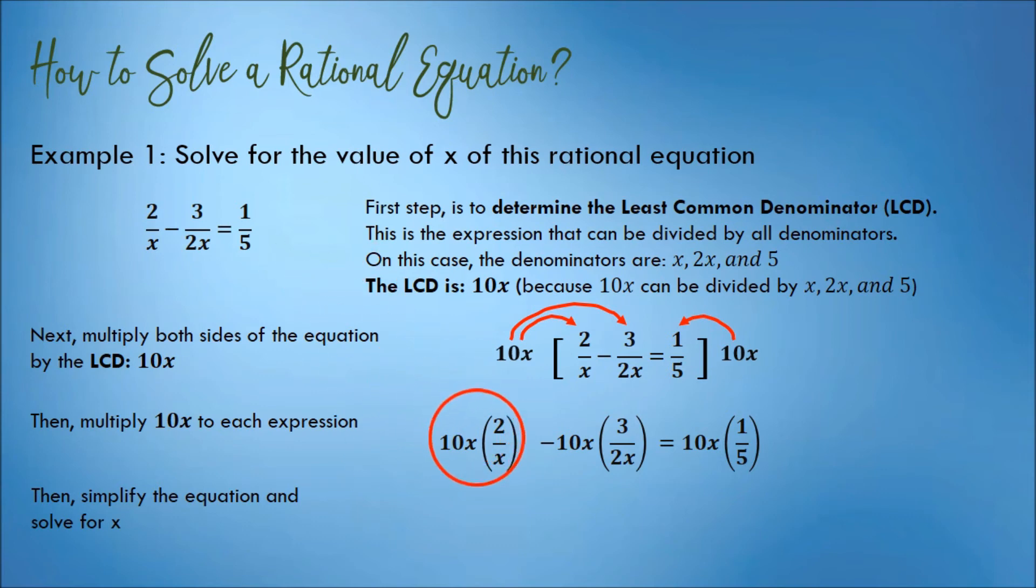10x times 2 over x is 20. Negative 10x times 3 over 2x is 15. 10x times 1 fifth is 2x.